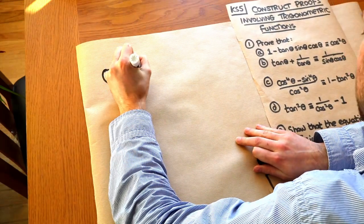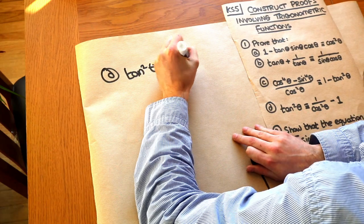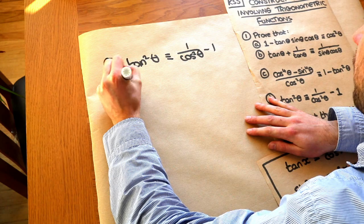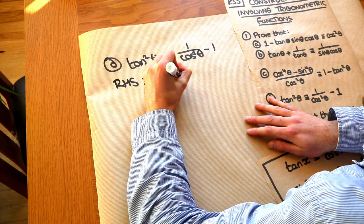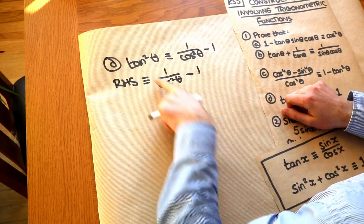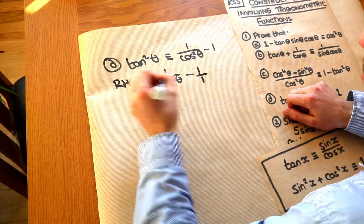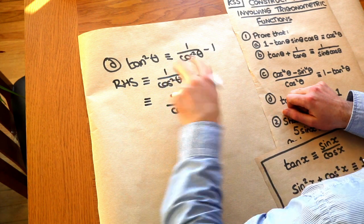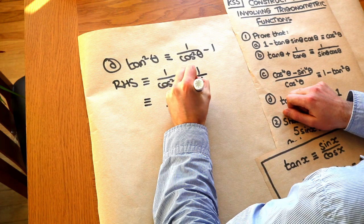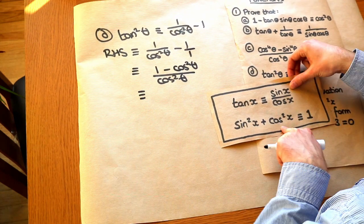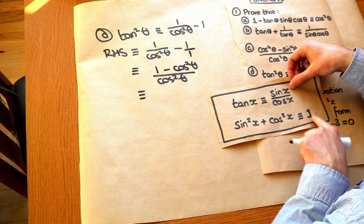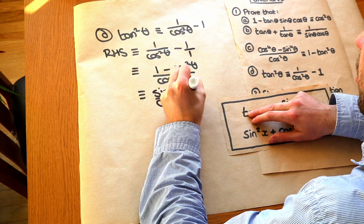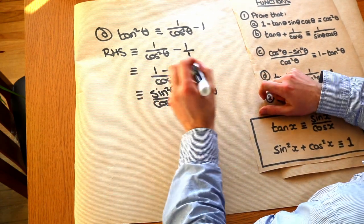Next: prove that tan squared theta is identical to 1 over cos squared theta minus 1. The right-hand side is more complicated, so I'll start there. Converting the 1 into 1 over 1 allows me to combine it into a single fraction with denominator cos squared theta. Cross-multiplying gives 1 minus cos squared theta in the numerator. Using our identity, 1 minus cos squared theta equals sine squared theta. So we have sine squared theta over cos squared theta, which equals tan squared theta — the left-hand side. Done.